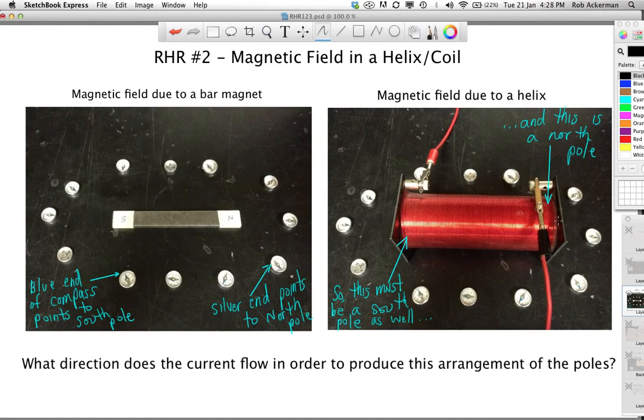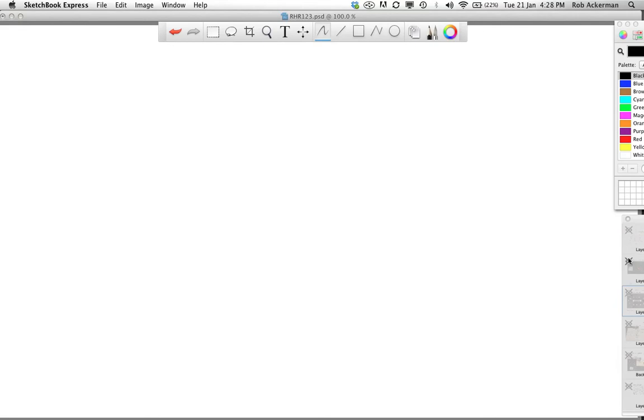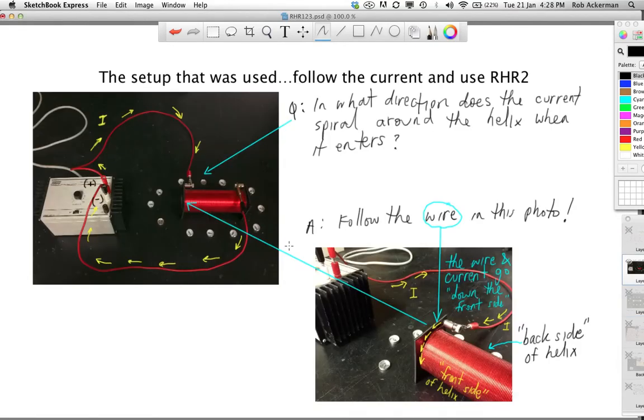The question is, how do we predict, based on the current flow, what direction will be north and which will be south? So let's look at a close-up, or at least a little bit more detailed picture. This is what we had in class. We had the positive terminal here, the current goes around, it enters this end of the solenoid, and of course the current makes its way to the other side.